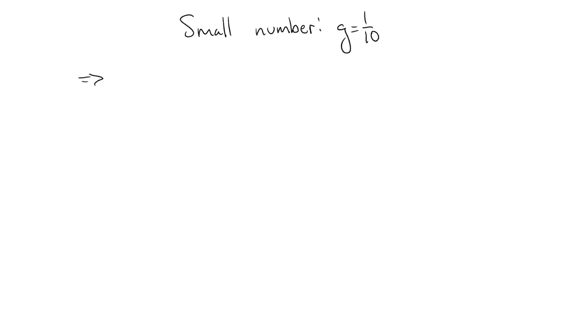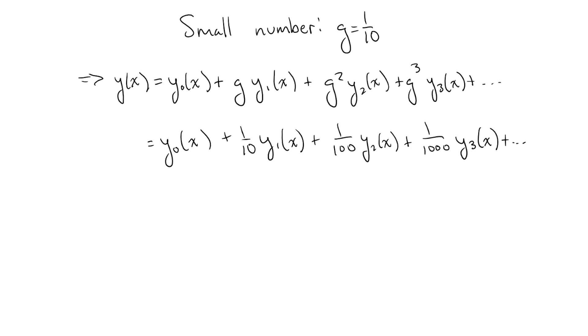For example, if our number, call it g, is one tenth, then g squared is one over one hundred, g cubed is one one thousandth, and so on.